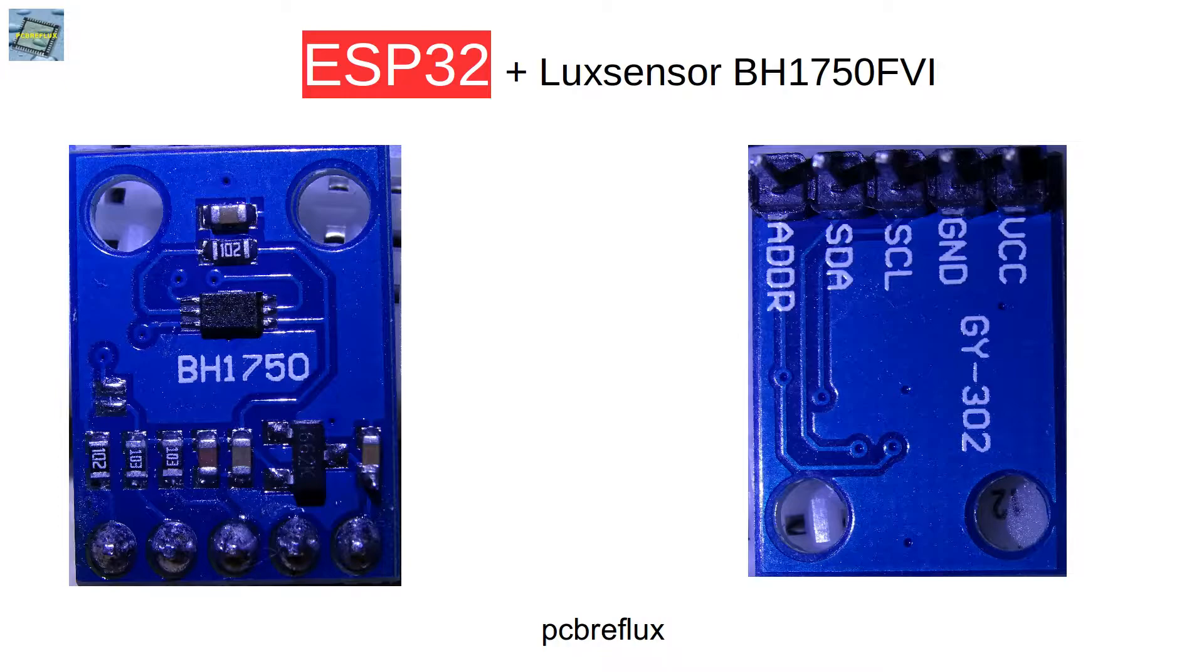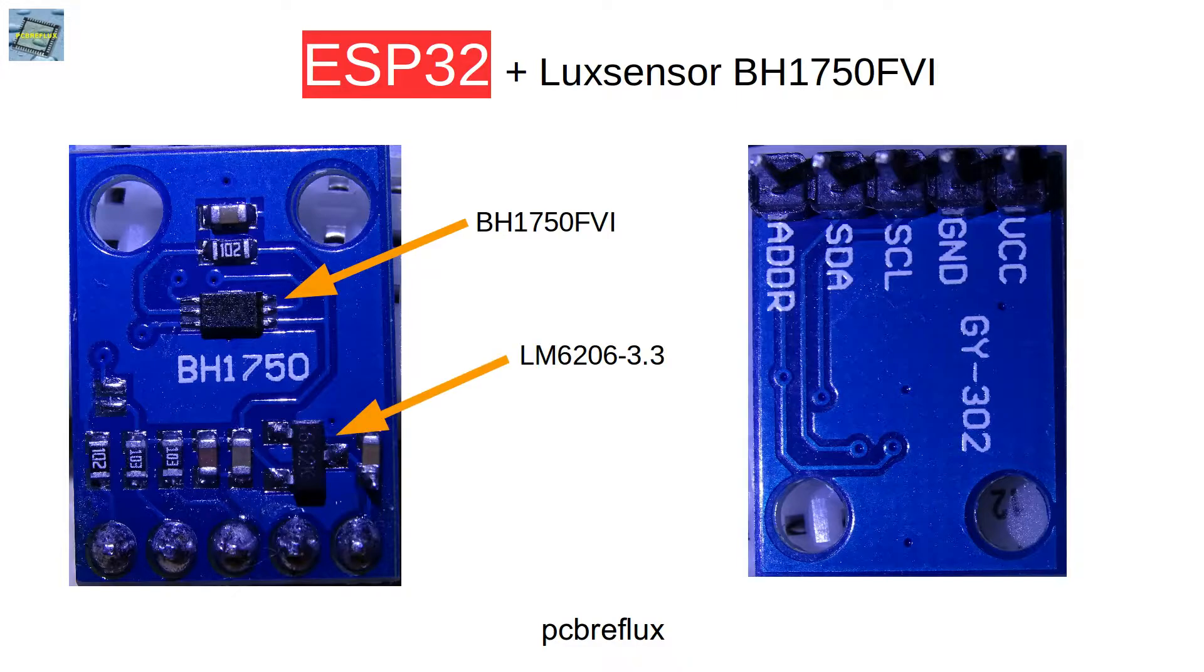For my breadboard setup I use the sensor in a module. The module came with the built-in BH1750 and also a small 3.3 volt low dropout voltage regulator. On the module there's also the address pin available so you can change the I2C bus address for the sensor.